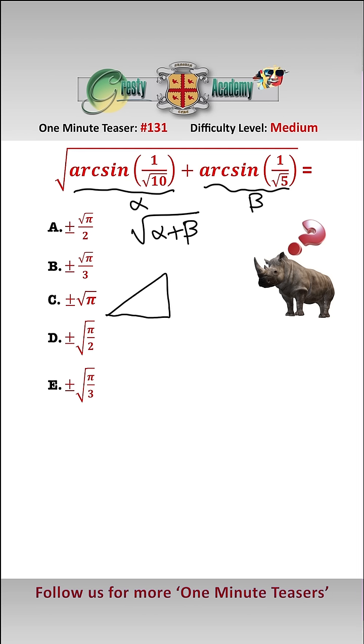So let's draw the triangle which has got alpha, and by Pythagoras we know if this is alpha and its sine is 1 over root 10, then by Pythagoras this side here is 3.